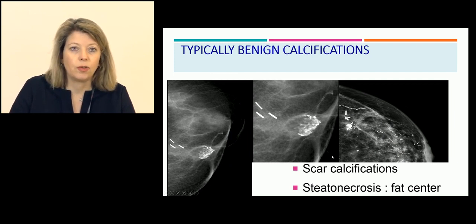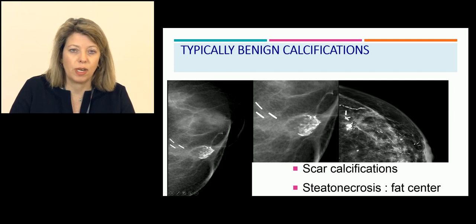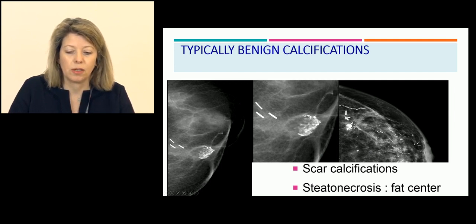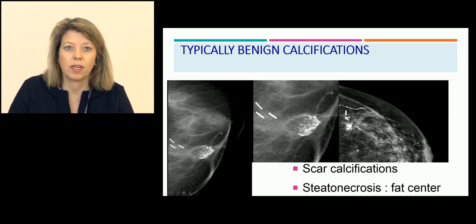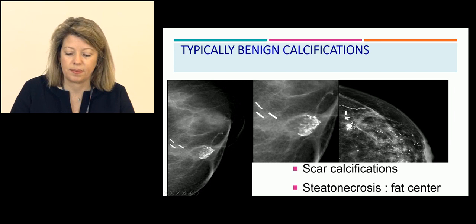Other typically benign calcifications include scar calcifications and steatonecrosis in a treated breast. Steatonecrosis is defined as peripheral linear calcifications with a hypodense fat center. We also have vascular and post-treatment calcifications in treated breasts.